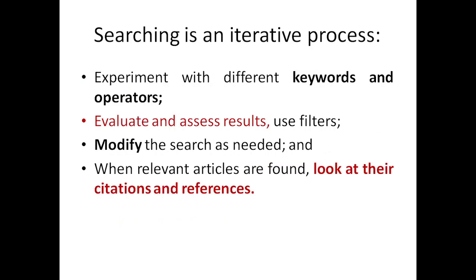Searching is an iterative process. You need to experiment with different keywords and operators. In my study, I started with keywords like silver nanoparticles, antibiotics, antibacterial property, and penicillin species. You can play with the keywords, interchange them, and keep experimenting with different keywords and operators to get the articles you need.